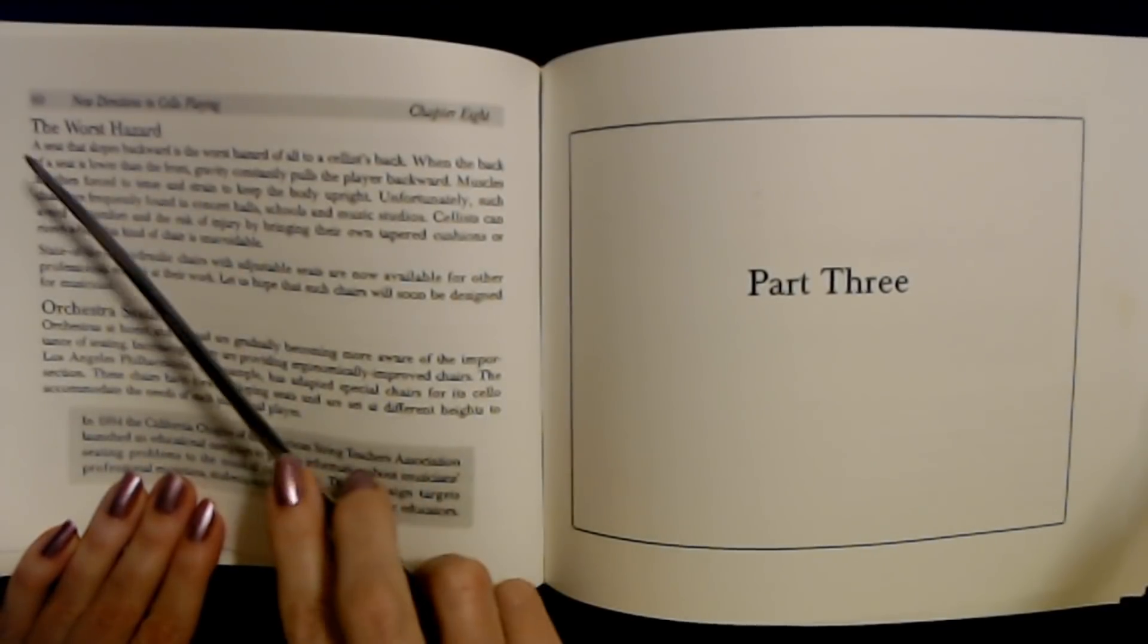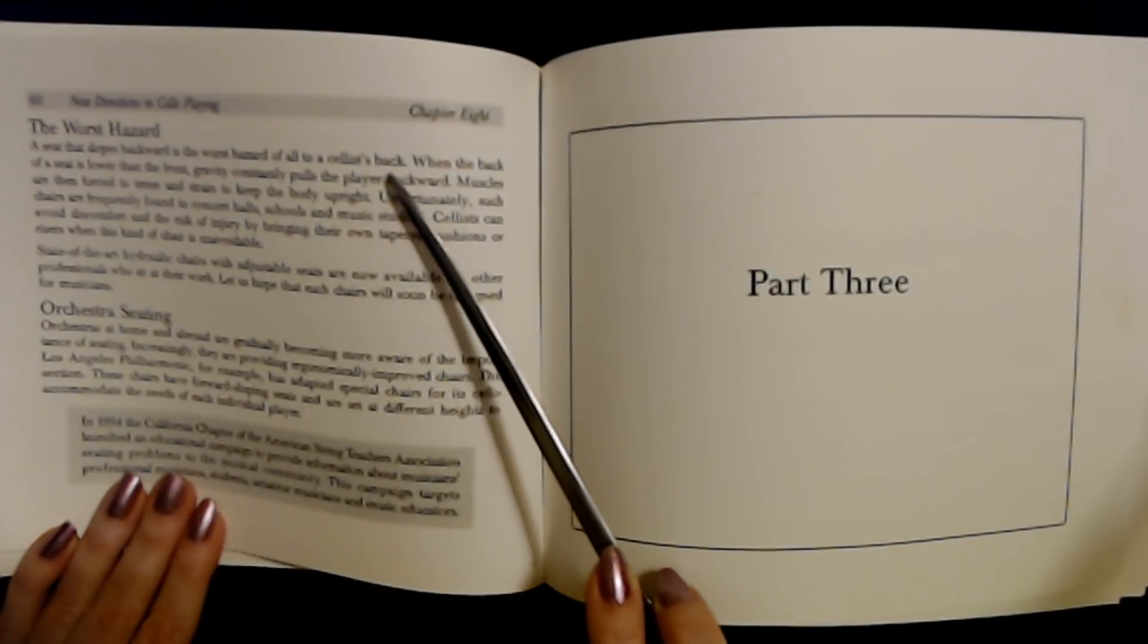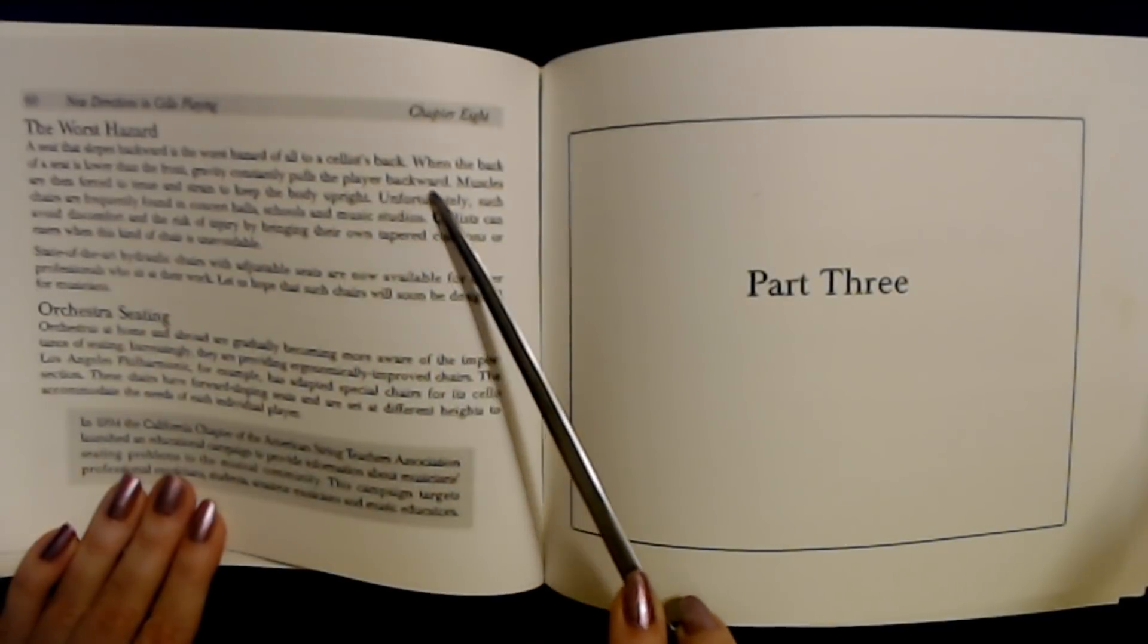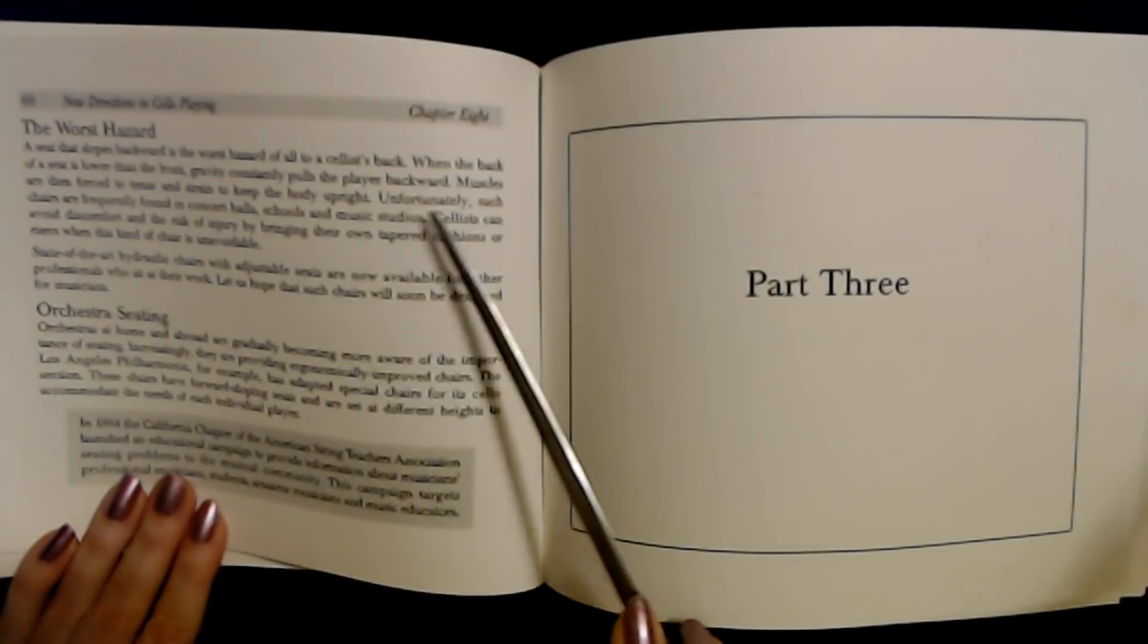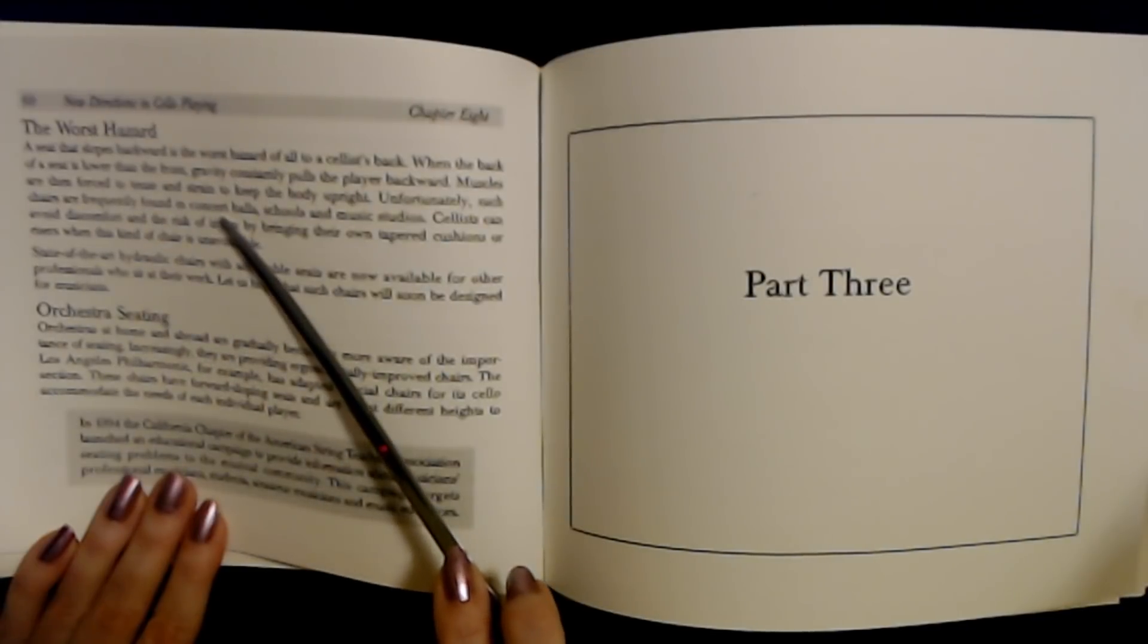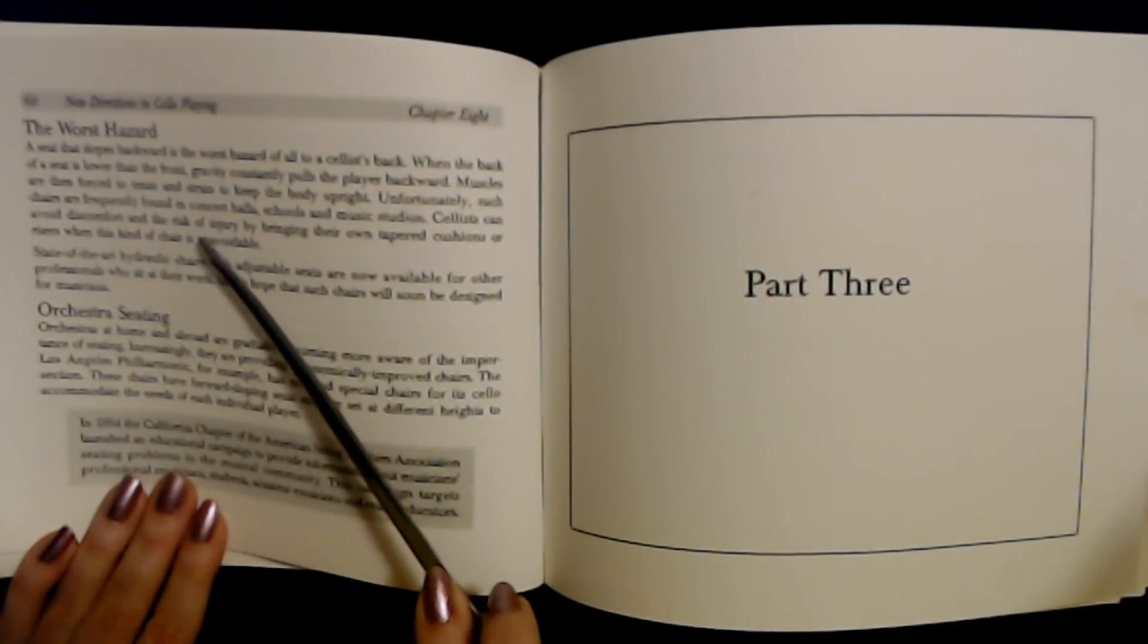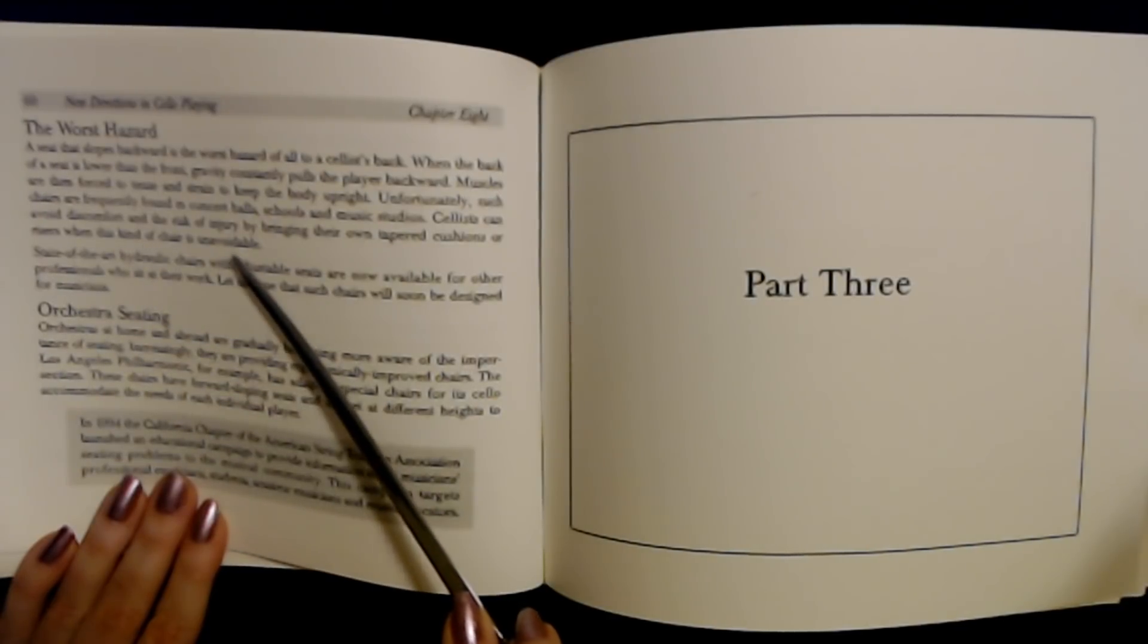The worst hazard. A seat that slopes backward is the worst thing that can befall a cellist's back. With the back of a seat lower than the front, gravity constantly pulls the player backward. This is especially hard for students trying to keep the body upright. Unfortunately, such chairs and benches are frequently found in concert halls, schools, and music studios. Cellists can avoid discomfort and the risk of injury by bringing a tapered cushion and some risers when this kind of chair is unavoidable.